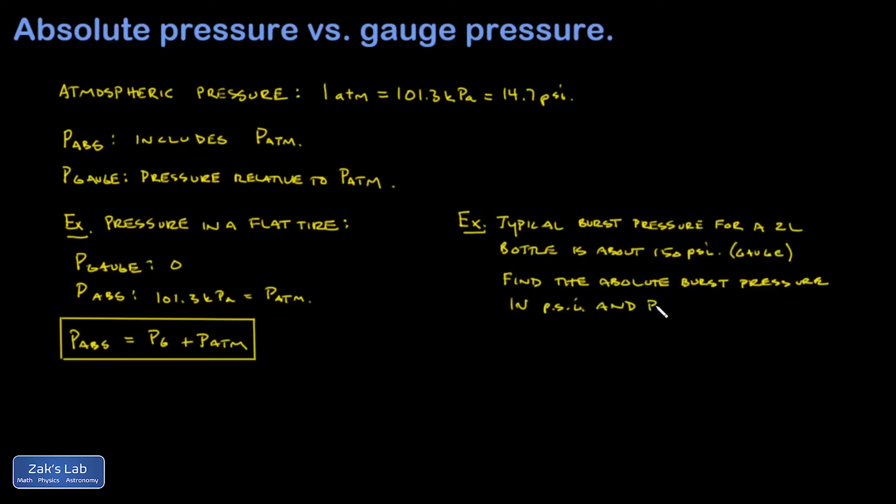So how about one more quick example? Okay, so we're told that the typical bursting pressure for a two-liter bottle is about 150 psi. Find the absolute burst pressure in psi and pascals. So certainly you would expect a manufacturer, if they're going to state the bursting pressure for a bottle, they're going to assume that you're on the surface of the earth and that you're not in some kind of vacuum chamber. So that's gauge pressure, 150 psi bigger than atmospheric pressure. So I can say my bursting pressure is going to be 150 psi gauge pressure. So we're writing in absolute form now, plus atmospheric pressure, which is 14.7 psi. And that gives me 164.7 psi.